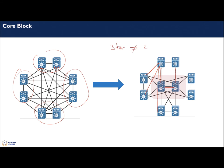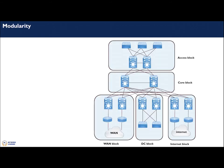So if you have too many sites at the distribution layer, you are better off having a core layer in the middle for aggregation. Now looking at modularity: we have a core block, an access block, an internet block, and a data center block. Although these blocks look similar — most having a distribution and access — they give us a lot of flexibility.